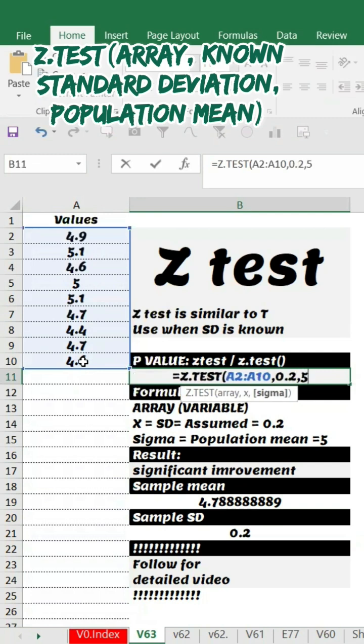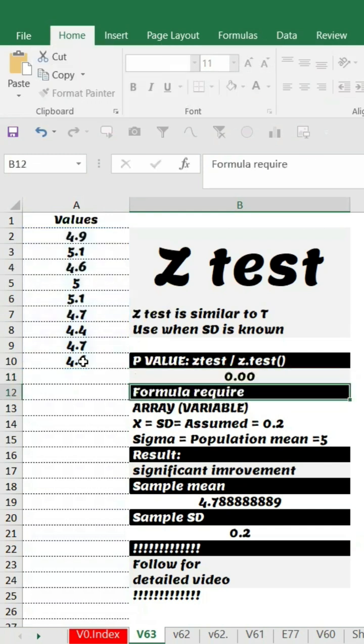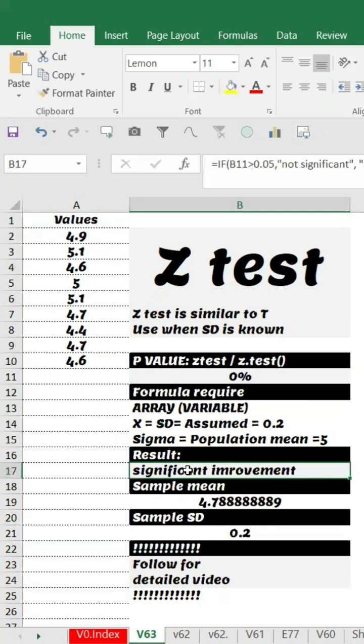So that means zero, in other words zero percentage. What does it significantly mean? Since it is less than 5 percent, these pH values are significant.